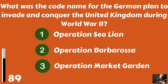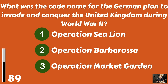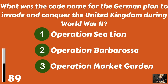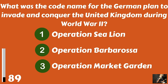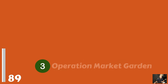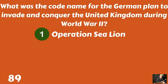What was the codename for the German plan to invade and conquer the United Kingdom during World War II? Operation Sea Lion? Operation Barbarossa? Or Operation Market Garden? Operation Sea Lion.